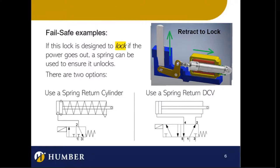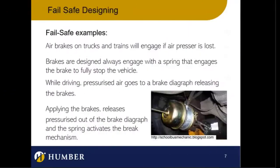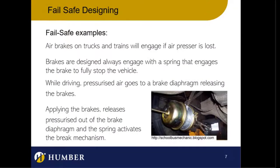This is what you've been challenged to do in the lab — add fail-safe to the locking mechanism. Both DCVs are currently single solenoid DCVs. To add fail-safe, you have to change the locking mechanism to a fail-safe DCV that has a spring in it. Then you have to think about the logic of how to make that happen so that if the system fails, the lock will lock.